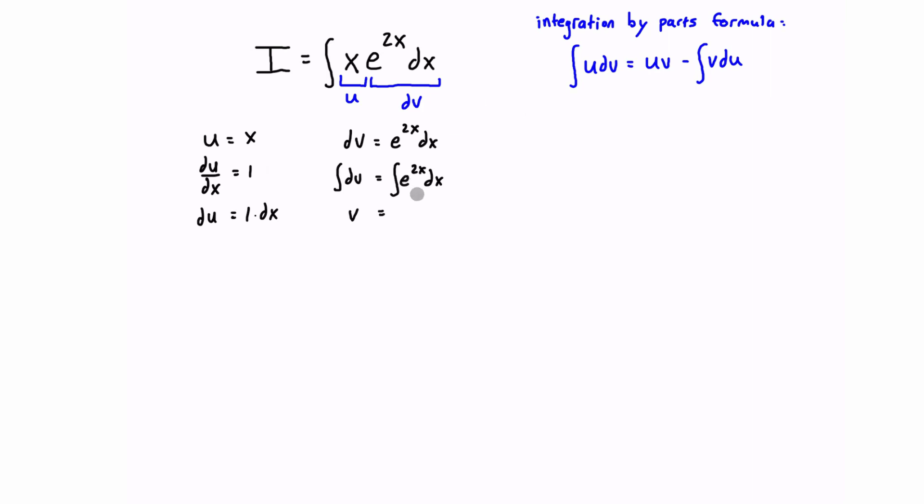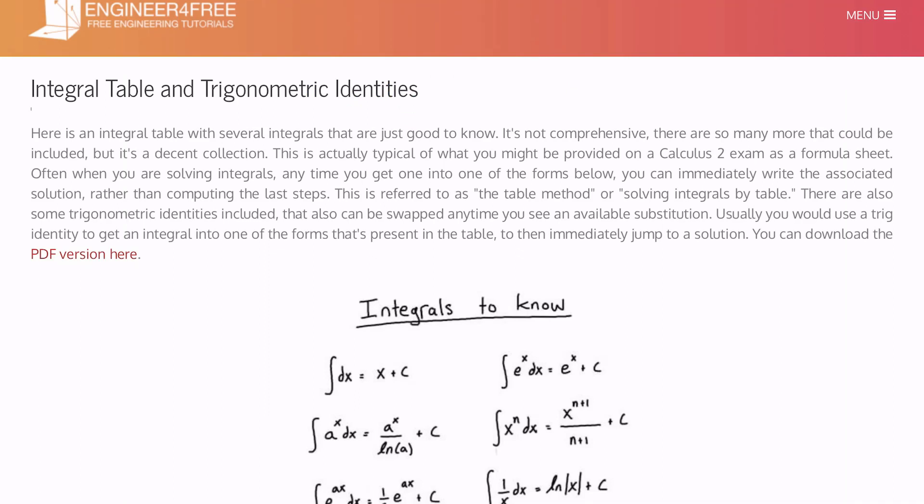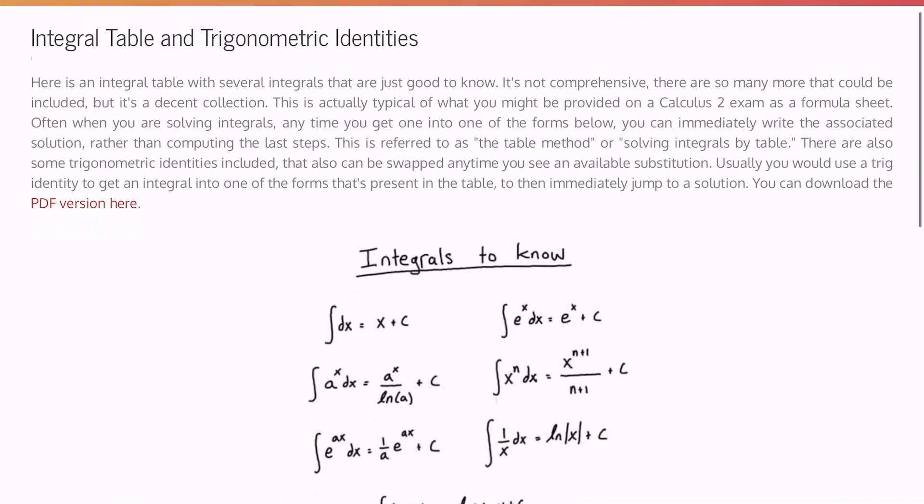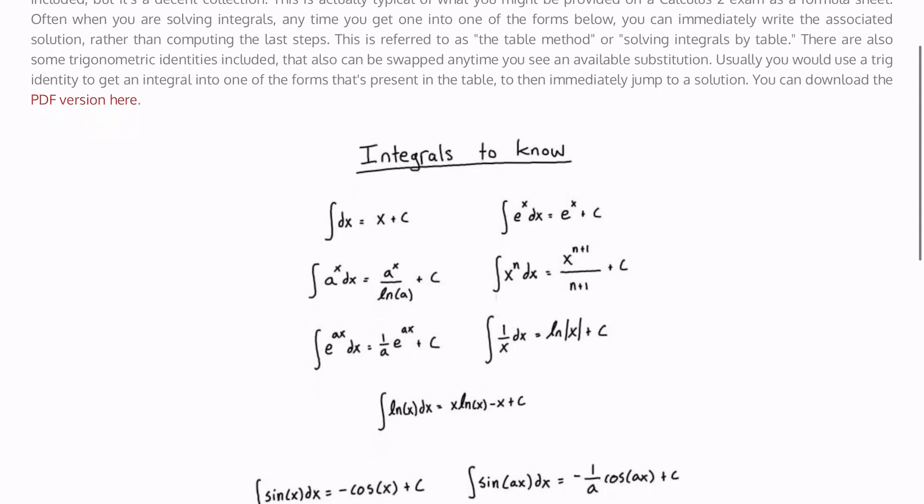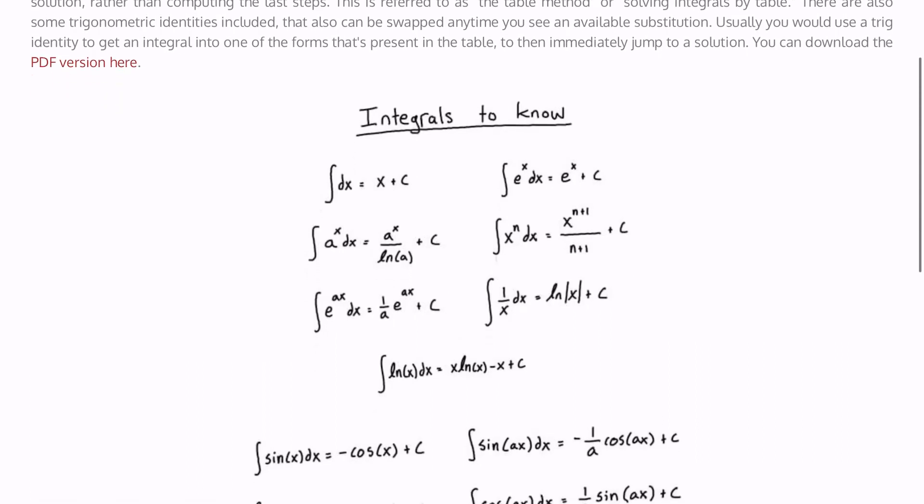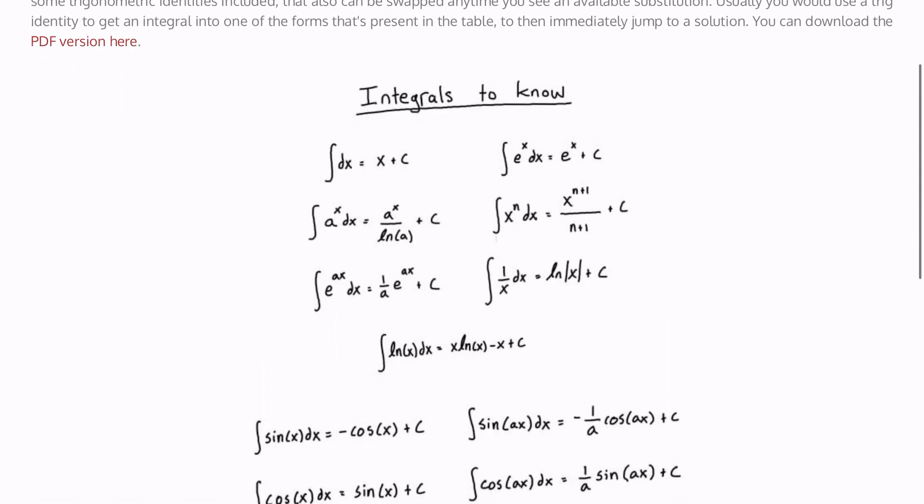Let's take a look at the integral table, which there is a link to this in the description below, but this is basically on the engineer for free website, and we're just going to look through here to see if we have the form that we were looking for. We had the integral of e to the power of 2x dx, and so when we look in here, we see this format, the integral of e to the ax dx is equal to 1 over a, e to the ax plus c.